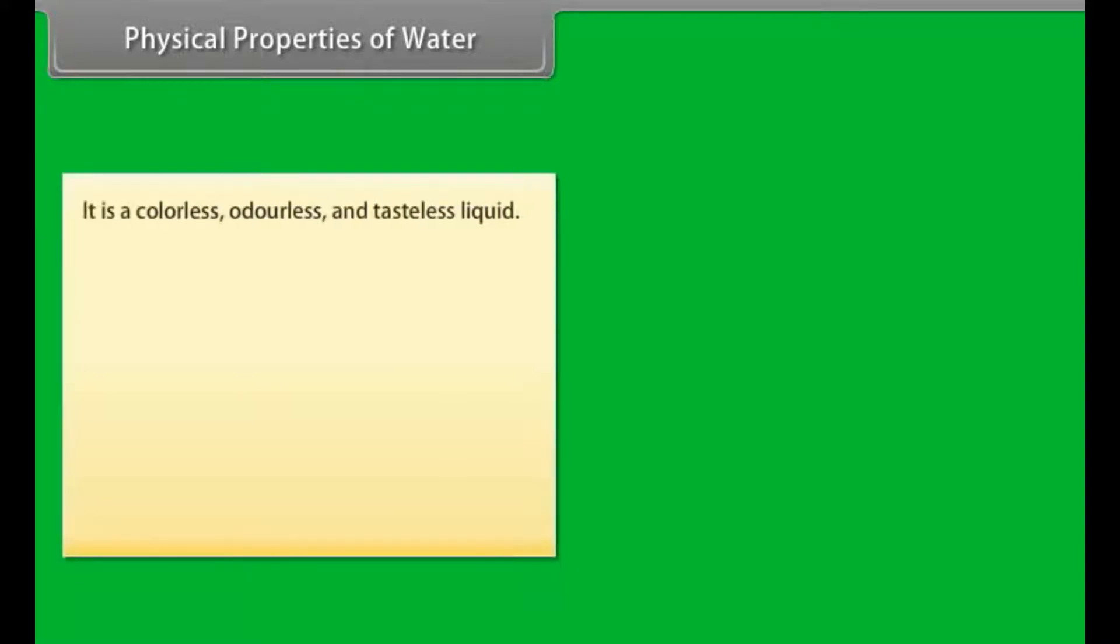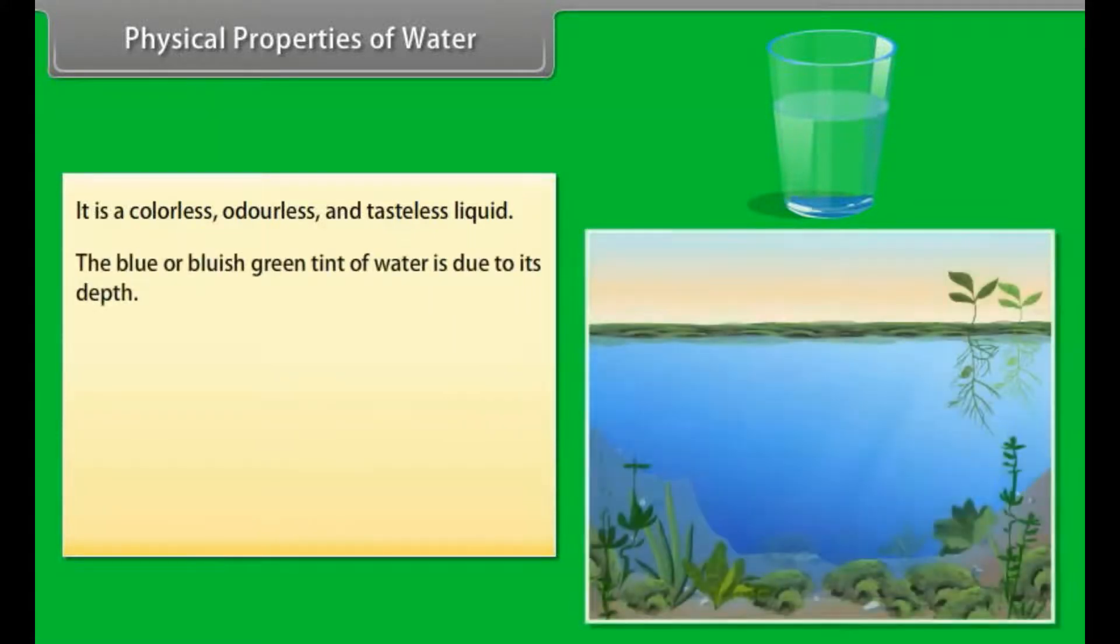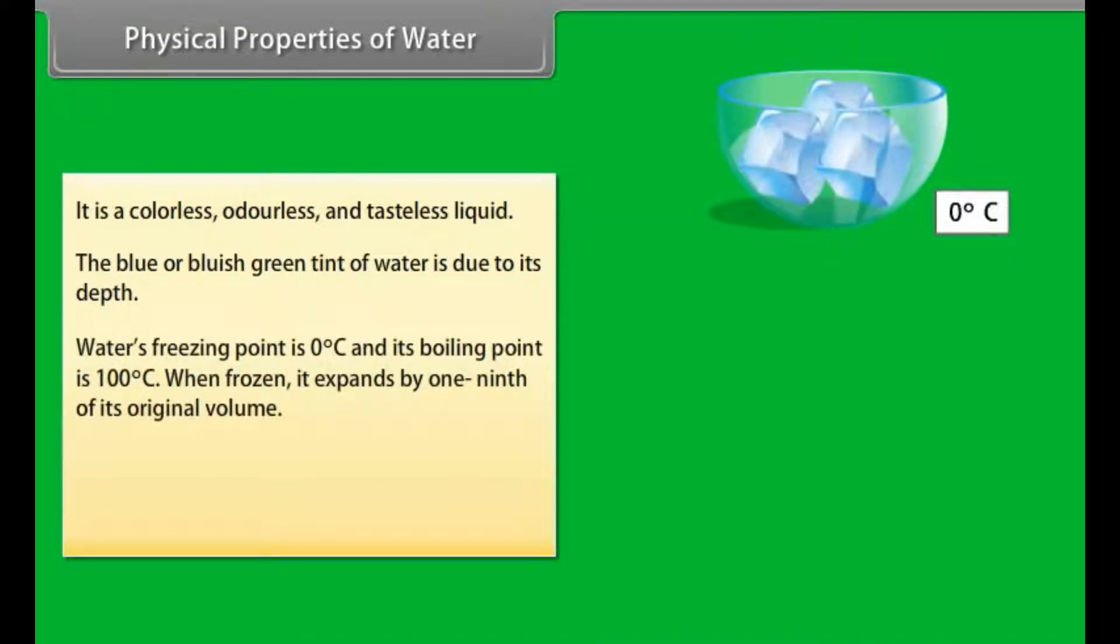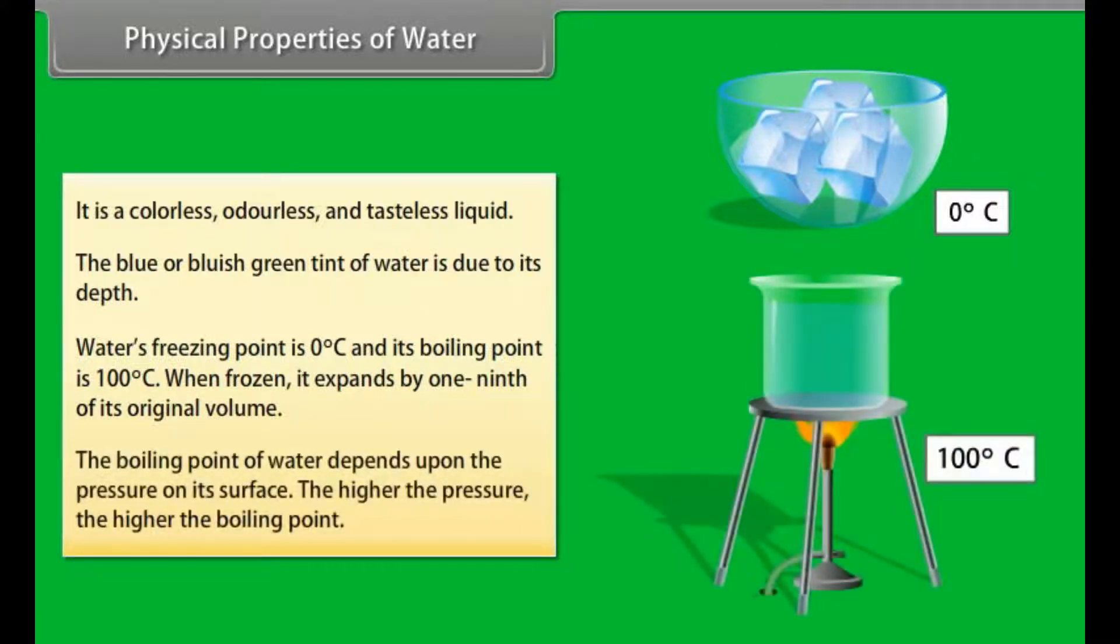Physical properties of water: It is colorless, odorless, and tasteless liquid. The blue or bluish-green tint of water is due to its depth. Water's freezing point is 0 degrees Celsius and its boiling point is 100 degrees Celsius. When frozen, it expands by one-ninth of its original volume. The boiling point of water depends upon the pressure on its surface. The higher the pressure, the higher the boiling point.